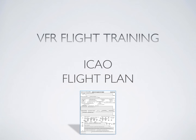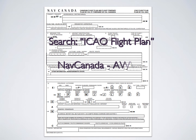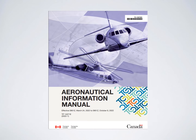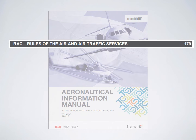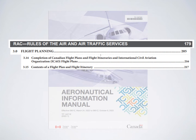This video is going to show you how to fill in an ICAO flight plan for your private pilot or commercial pilot flight test. You'll need to get a copy of the ICAO flight plan - print one out. You don't actually need me for any of this; you can find all the information in the AIM under RAC section 3, which has all the details on how to fill out the ICAO flight plan.